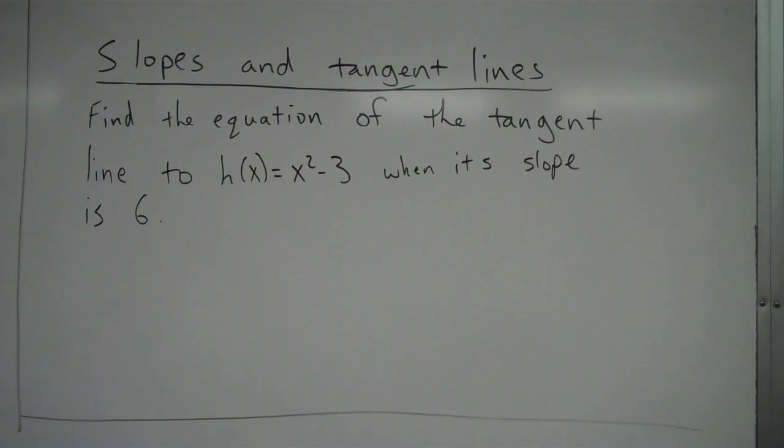Alright, we're going to take a look at another tangent line problem here. Find the equation of the tangent line to h(x) = x² - 3 when its slope is 6.